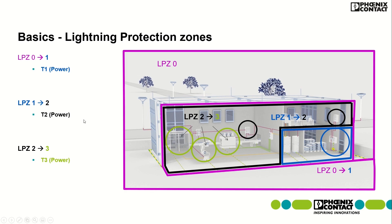The Type 2 boundary indicates the sub-distribution board of the building. When moving from lightning protection zone 2 to zone 3, the recommendation is a Type 3 power surge protection device — shown here as the green circle — where all sensitive electrical and electronic systems are installed.